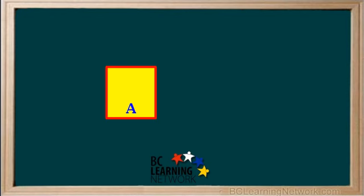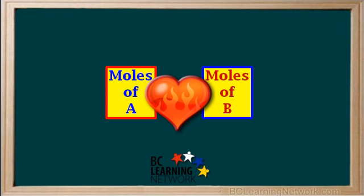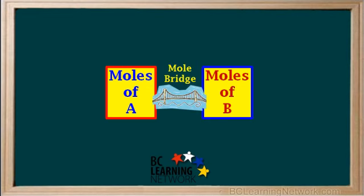Let's say we are given a quantity of substance A, either used up or produced, and we are asked to find a quantity of substance B either used up or produced in the same chemical reaction. When using a chemical equation for calculations, we must always determine the moles of substance A, and using the equation, we always find the moles of substance B. Moles are at the heart of stoichiometry problems. We convert from moles of A to moles of B using the ratio of the coefficient of B to the coefficient of A. This is often called the mole bridge.